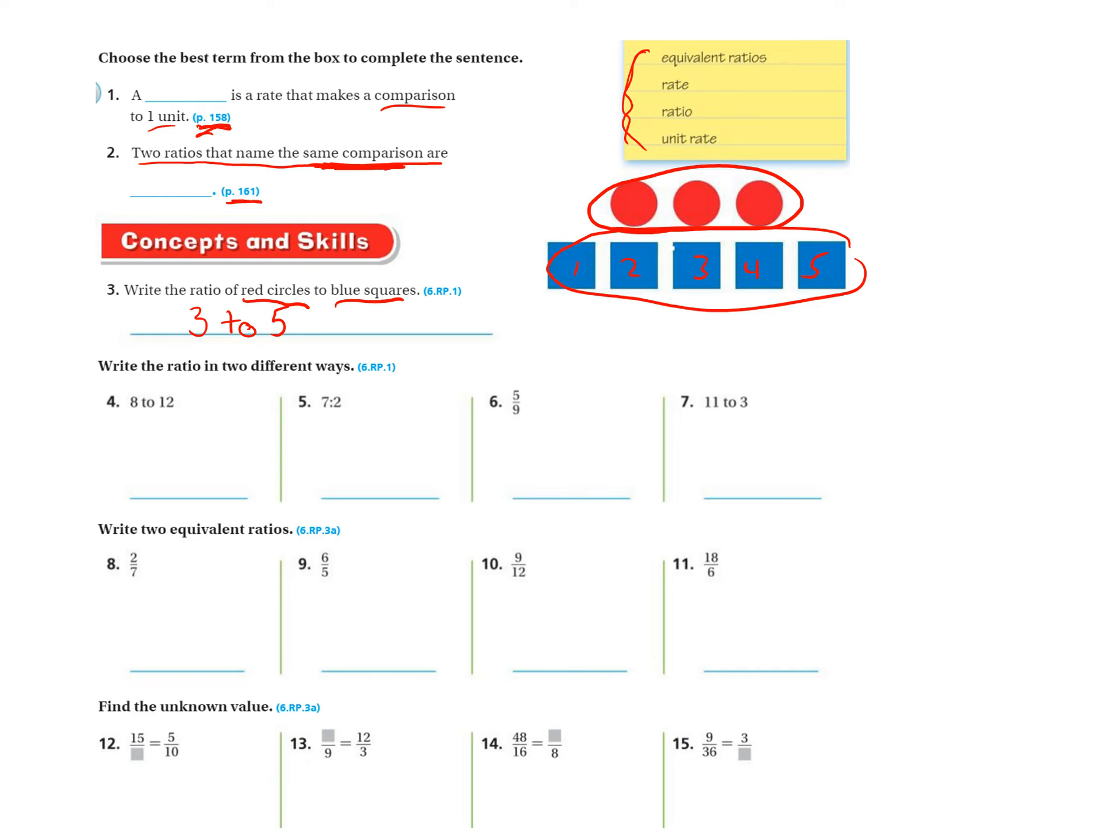Write the ratio in two different ways. So this is one way, eight to twelve. You can also write it as eight to twelve using the colon. And you can also write it eight, or excuse me, eight to twelve, you can also write it as a fraction.